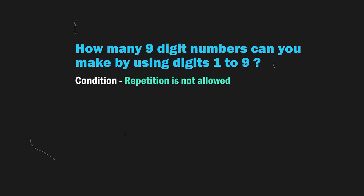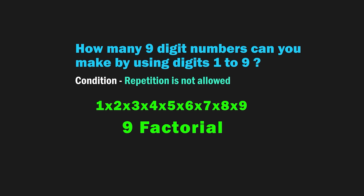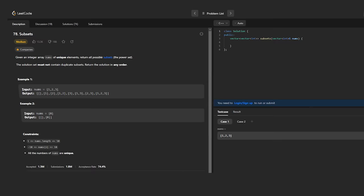For the 9-digit case using all the digits from 1 to 9, the answer would be the multiplication of all the numbers from 1 to 9. And this multiplication is called 9 factorial and is written like this. Factorial is nothing but the multiplication of all the numbers from 1 to that number, including the number itself. Factorial appears in many algorithms like finding subsets of a set and permutation of numbers.